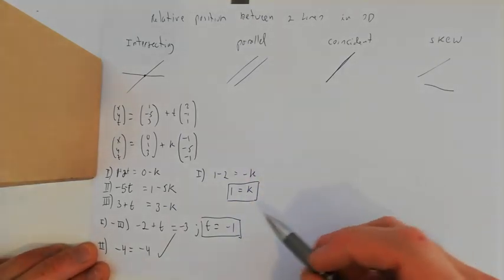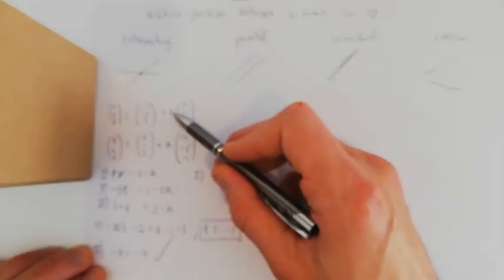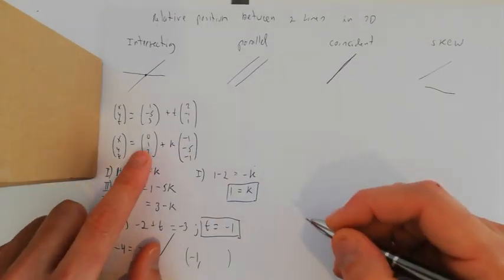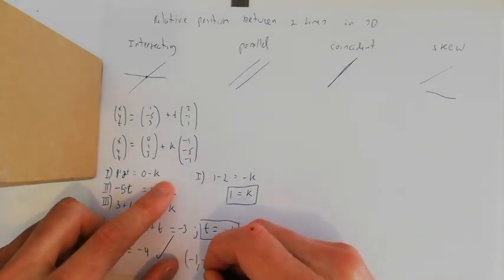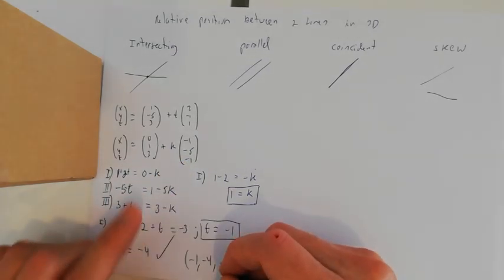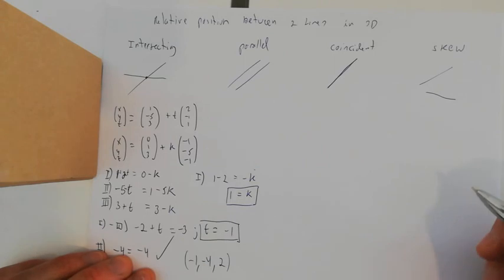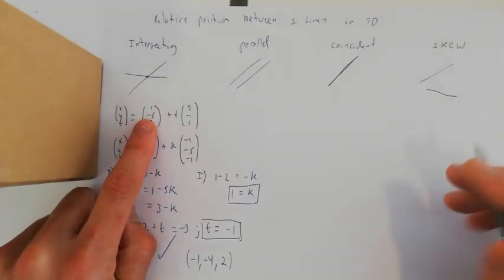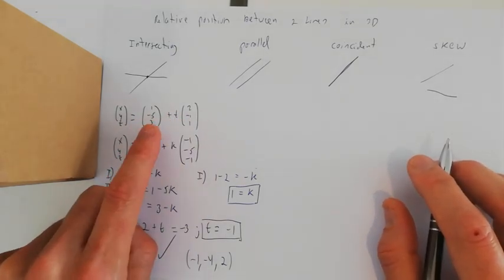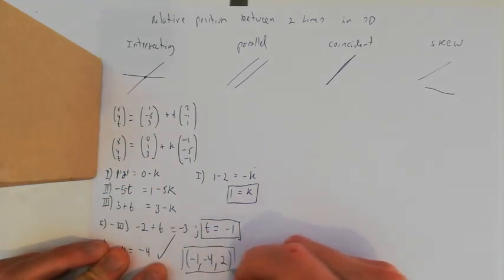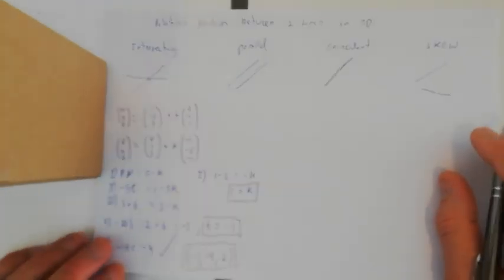To find the point of intersection, plug k = 1 into line 2: (0 − 1, 1 − 5, 3 − 1) = (−1, −4, 2). Plugging t = −1 into line 1: (1 − 2, −5 + 1, 3 − 1) = (−1, −4, 2). Both give the same point, confirming the lines intersect at (−1, −4, 2).